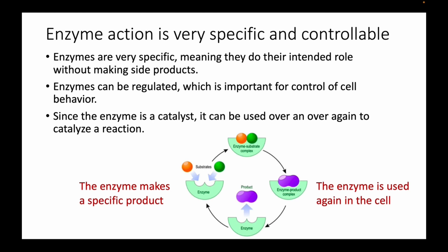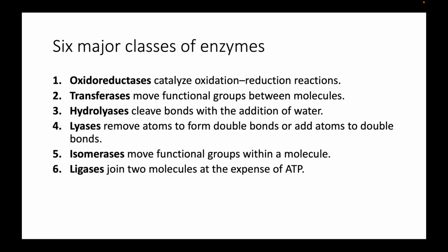Why does biology use enzymes? The main reasons are specificity and controllability. Enzymes carry out their intended role without making side products — unlike organic chemistry lab reactions that might only yield 70% intended product with 30% junk. Enzymes produce only the intended product. They can also be regulated by inhibitors or activators, allowing cells to turn enzymes on and off. And since an enzyme is a catalyst, it can be used over and over again.